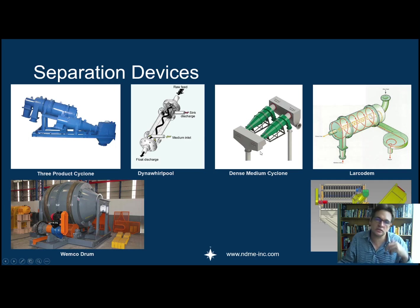The dense medium cyclone is probably the workhorse of this type of separation device, and that's what the Dutch State Mines is based on. There are the newer three-product cyclones where you can basically separate—it's more for the coal industry where you've got an export coal or high-quality coal, a middling stamp coal which you can use often for local power stations, and then a discard stream.